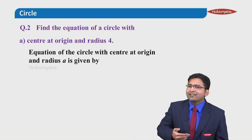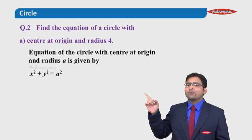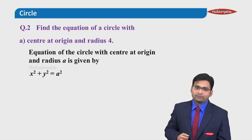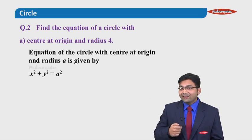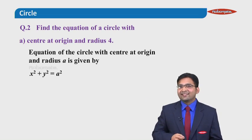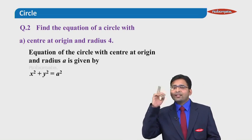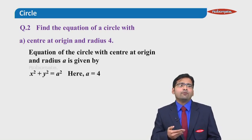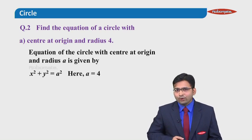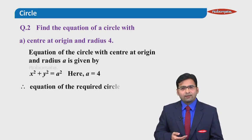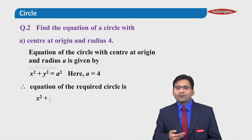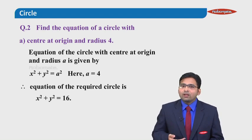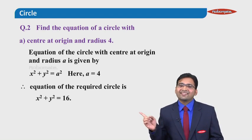For a standard circle with center at origin and radius a, the equation is x squared plus y squared equals a squared. Here the radius is 4, so a equals 4. Substituting, the equation of the required circle is x squared plus y squared equals 16.